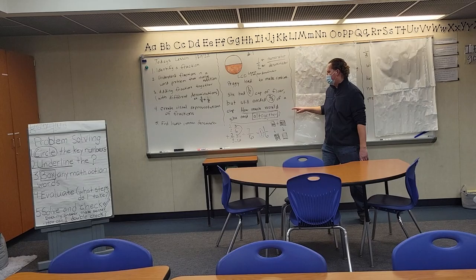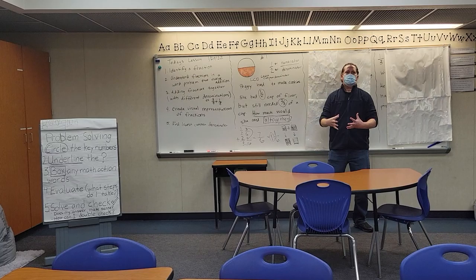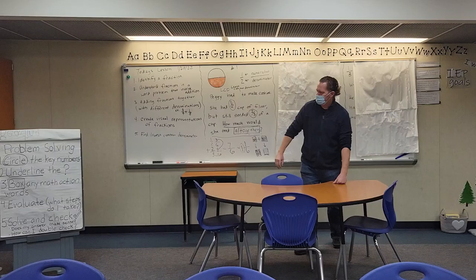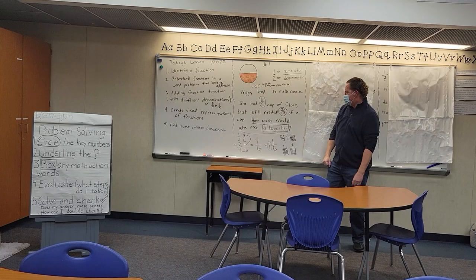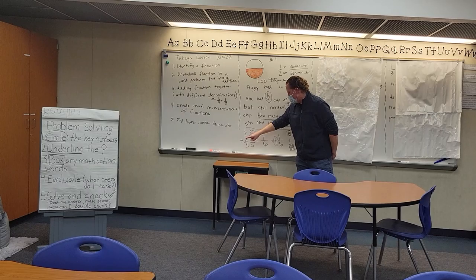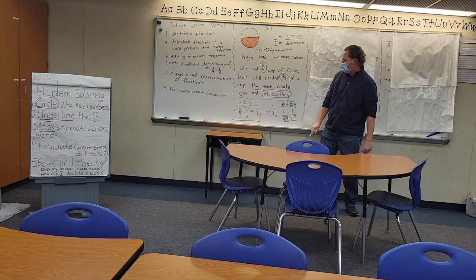Now I'm going to move on to step three. Did I box any math action words? I did — I boxed the word 'altogether.' If I'm thinking 'altogether,' that must be an addition problem, because that sounds like I have to add this up. So I go to step four and evaluate the steps I have to take. I'm taking my one-half and my two-thirds, I'm going to put them together using addition. I put one-half on top and two-thirds on the bottom with a line, and I'm ready to add those two up.